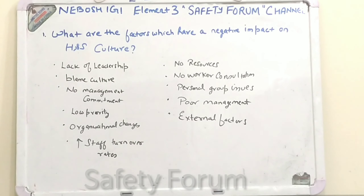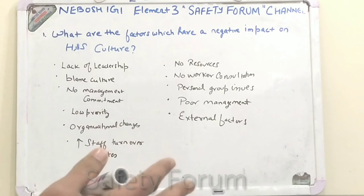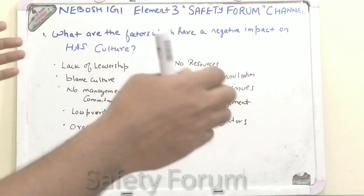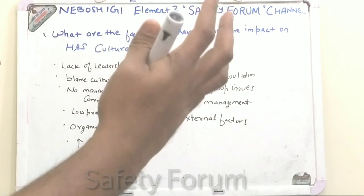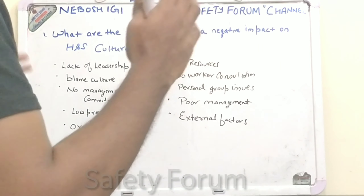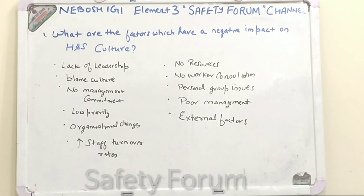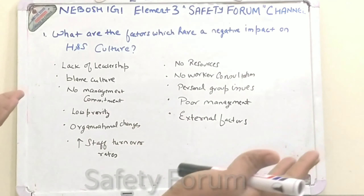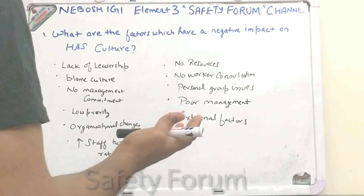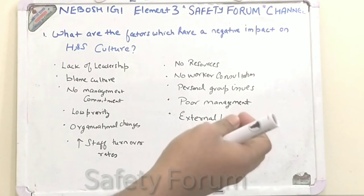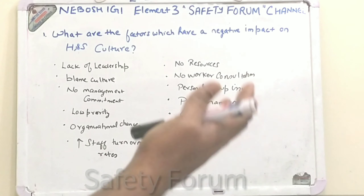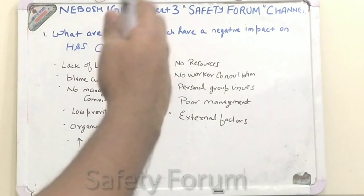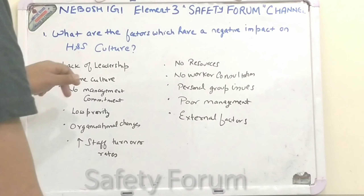The first is lack of leadership from the management. If the management is not supporting you, it will be a very big factor creating a negative impact on the health and safety culture. You will be approaching the management regarding various issues, but if the management is not showing any proper leadership, if you don't know who to approach, it shows a negative impact on the health and safety culture.